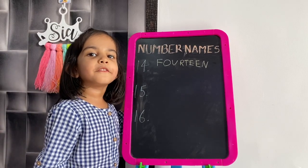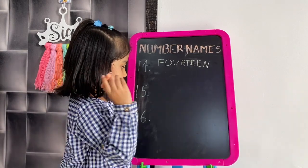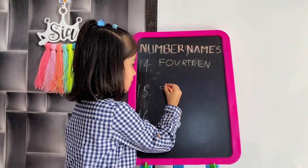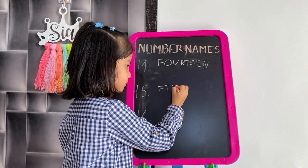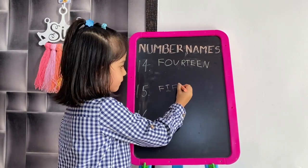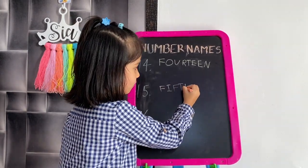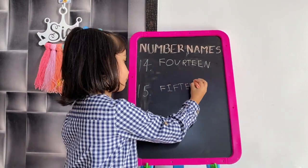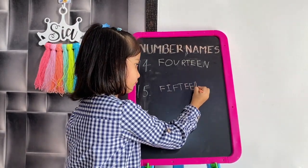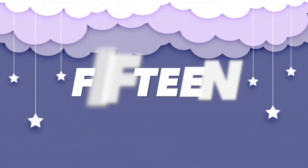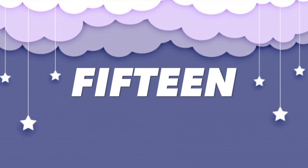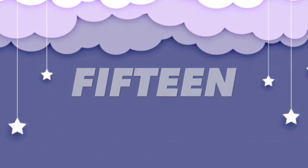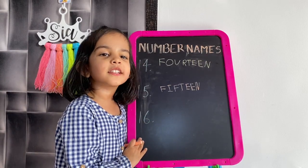Now I will write 15. F, I, F, T, E, E, N. 15. F, I, F, T, E, E, N. 15.